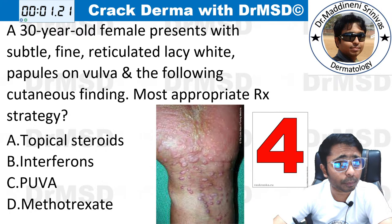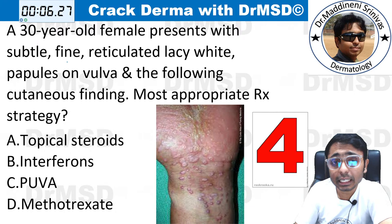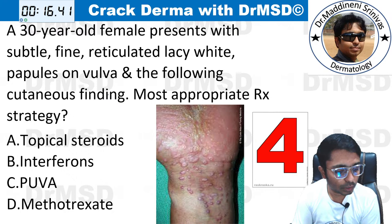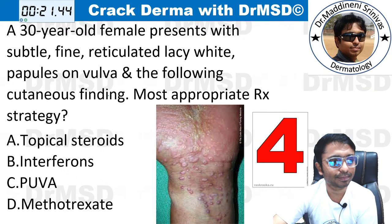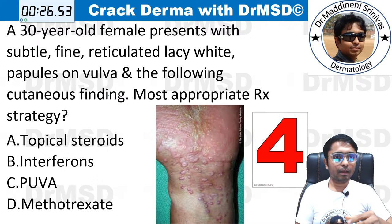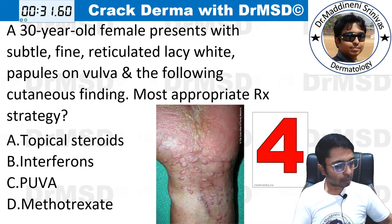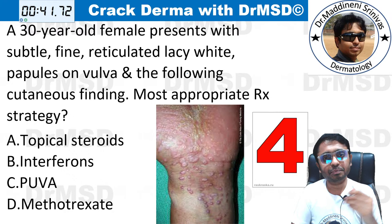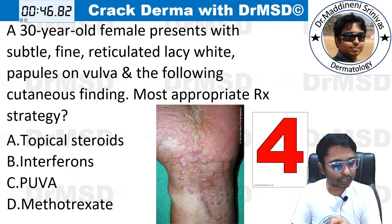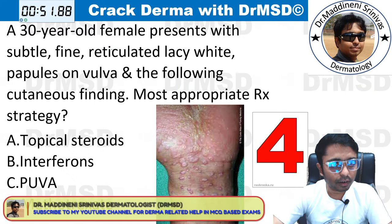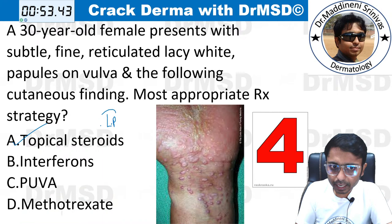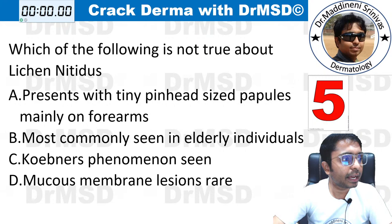Question number four. A 30-year-old female presents with subtle fine reticulated lacy white papules over the vulva. What is the most appropriate treatment strategy? Options are topical steroids, PUVA, or methotrexate. I got Dr. Ankit Srivastava answering option A. Vasundra and Pragna Chaudhary also have the correct answer. The answer here is topical steroids — this is a case of lichen planus and topical steroids is the most appropriate treatment.